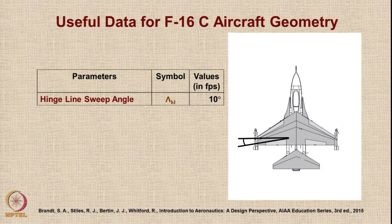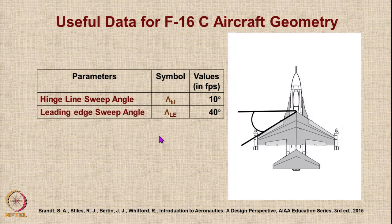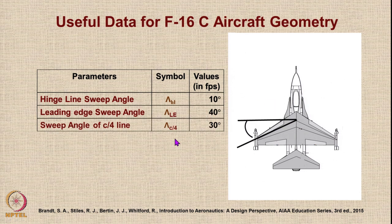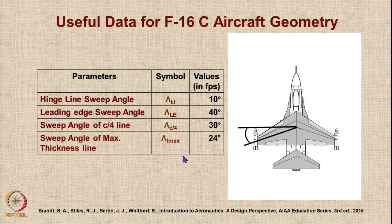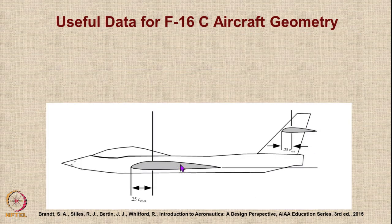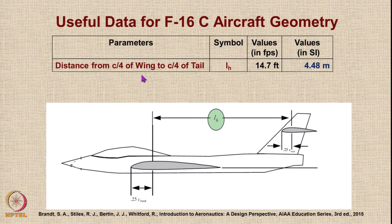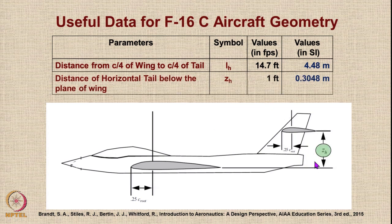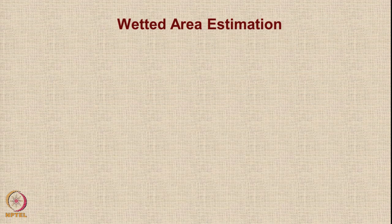Additional parameters: the hinge line sweep of the flaps is 10 degrees, leading edge sweep is 40 degrees, quarter chord line sweep is 30 degrees, and the maximum thickness line sweep angle is 24 degrees. From the side view, we need the tail arm — distance from the quarter chord of the wing to the quarter chord of the tail — and the vertical displacement of the horizontal tail from the wing plane, which is 1 foot (0.3048 meters). With this information we can estimate the wetted area.